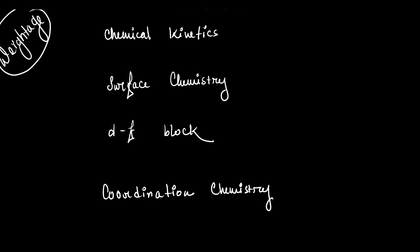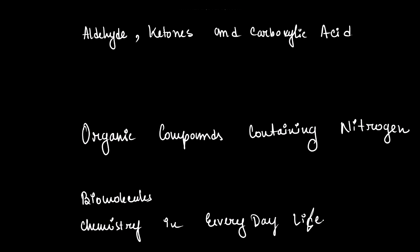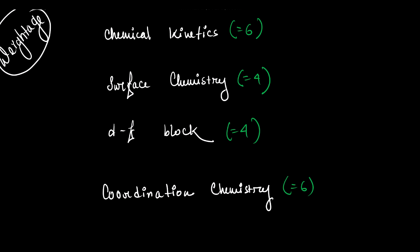According to weightage, first we have Chemical Kinetics — total marks from Chemical Kinetics: six marks, and six out of 35 is a very high amount. Then Surface Chemistry: four marks. D&F Block: four marks. Coordination Chemistry: six marks. Aldehyde, Ketone and Carboxylic Acid: six marks. Nitrogen Compounds: five marks. Biomolecules: two marks. Chemistry in Everyday Life: two marks.